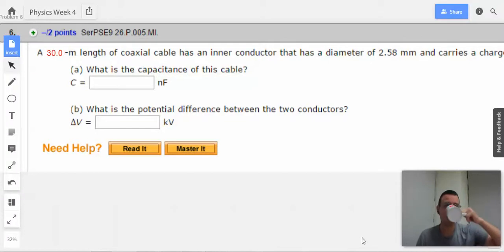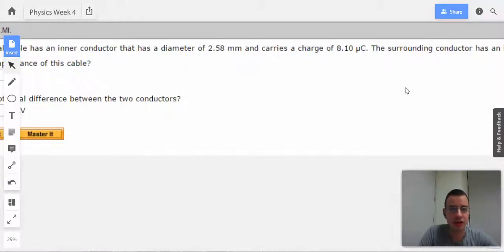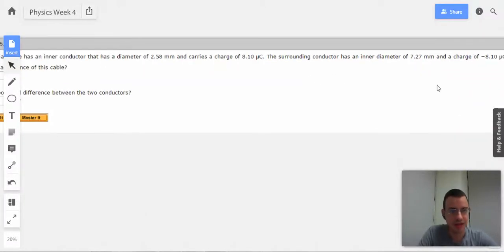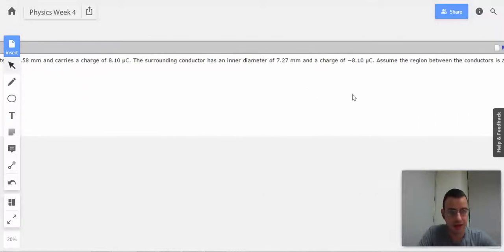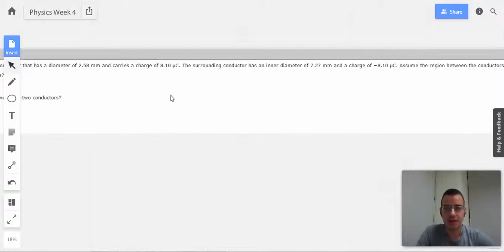Problem 6. A 30 meter length of coaxial cable has an inner conductor that has a diameter of 2.58 millimeters and carries a charge of 8.1 micro-coulombs. The surrounding conductor has an inner diameter of 7.27 and a charge of negative 8.1 micro-coulombs. Assume the region between that conductor is air.